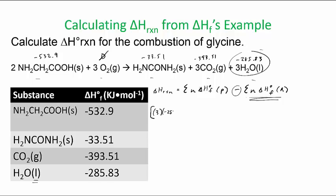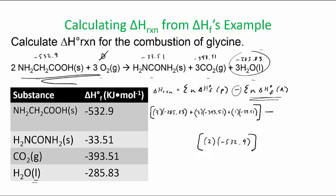So it's a lot easier if you keep it in brackets. I'll put three times, so I'll take care of this one, negative 285.83. Plus three times negative 393.51. Plus, that's only one, times negative 33.51. And then close the brackets, subtract, and then open new brackets, and then put your reactants here. So minus two times negative 532.9. And then close the brackets.